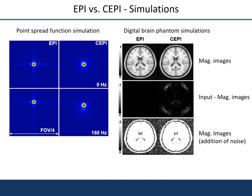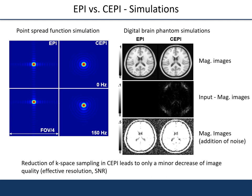Furthermore, the SNR is reduced to about 77%, which correlates well with the reduction of the sampling points of the trajectories. Overall, these deviations are relatively minor and comparable image quality between the EPI and the CEPI can be expected.